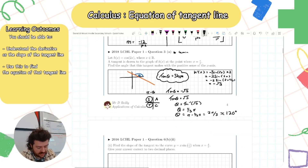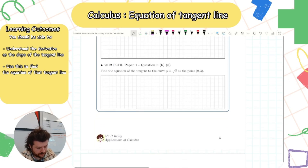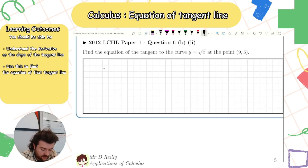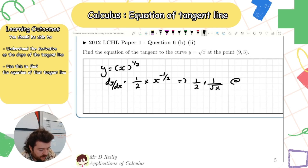Let's look at one more from 2012. Find the equation of the tangent to the curve y = √x at the point (9, 3). Rewriting: y = x^(1/2), so dy/dx = (1/2)x^(−1/2) = 1/(2√x). Evaluating at x = 9: (1/2) × (1/√9) = (1/2) × (1/3) = 1/6. So my slope is 1/6.